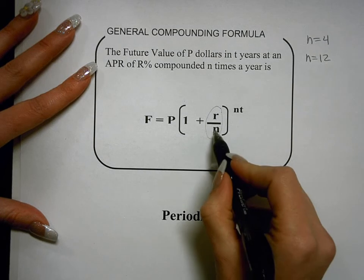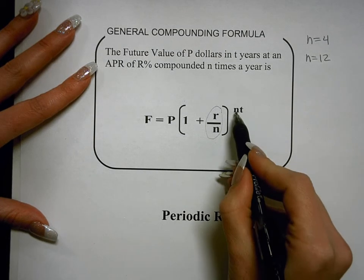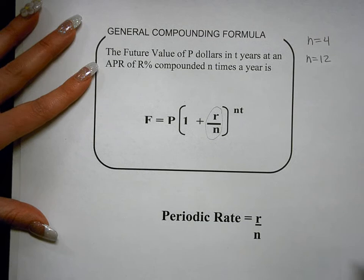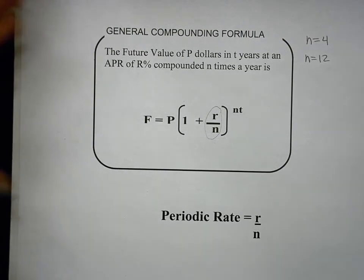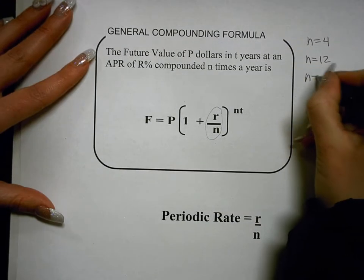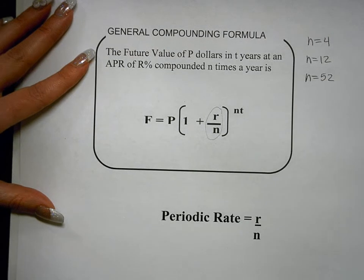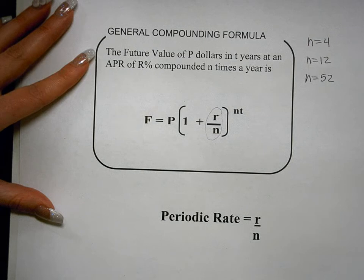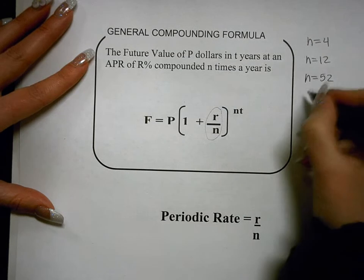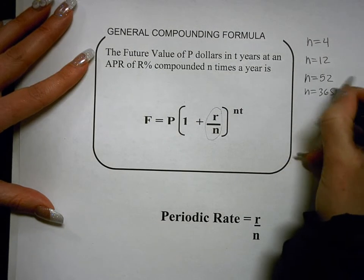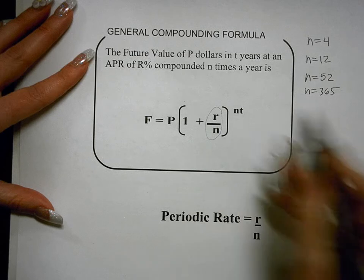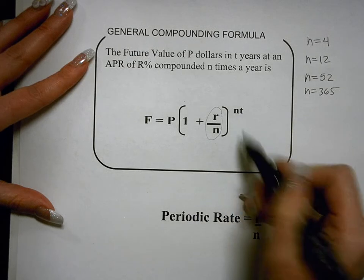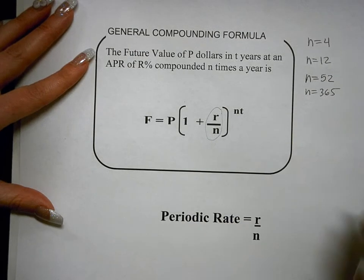Wherever you see an N, you'd substitute 12 in both places in the formula. If you're talking about something compounded weekly, there are 52 weeks in a year, so N would equal 52. If you're talking about something compounded daily, there are 365 days in a year, so N would equal 365. You'd put 365 wherever there is an N, including up in the exponent.